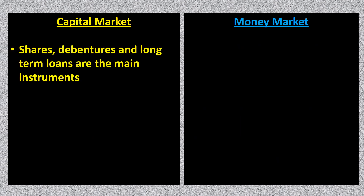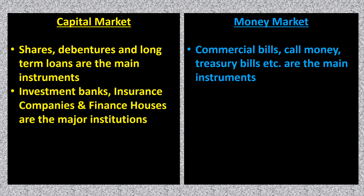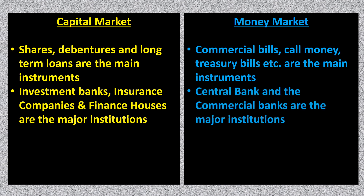The main instruments in the capital market are shares, debentures, and long-term loans, while the instruments in the money market are treasury bills, commercial bills, money at call and short notice, etc. The financial institutions important in the capital market are investment banks, insurance companies, and finance houses, while in the money market they are commercial banks and the central bank.